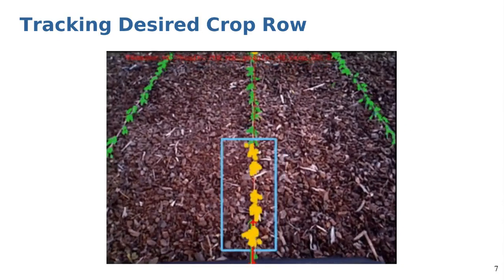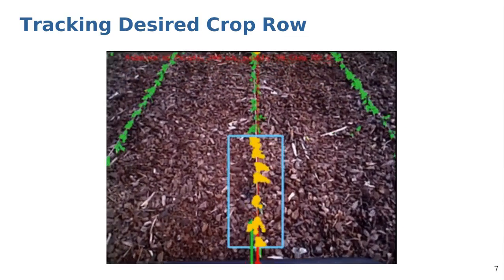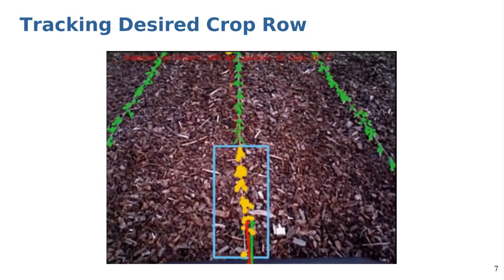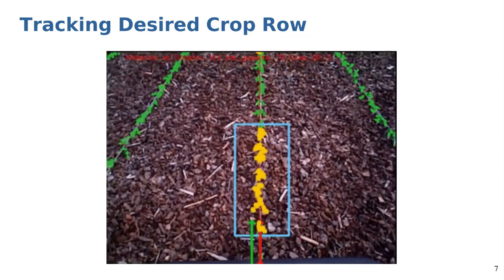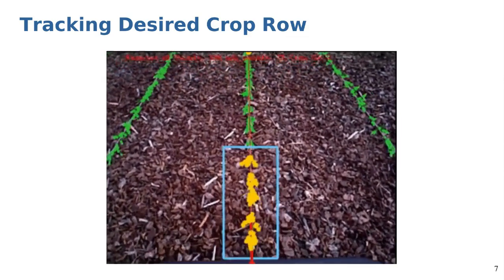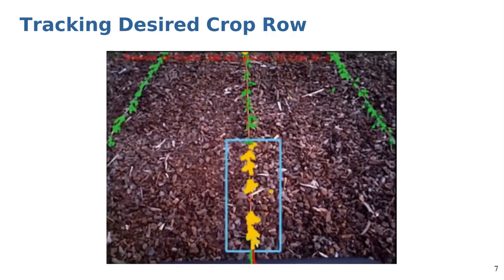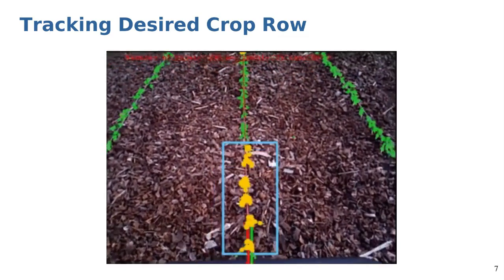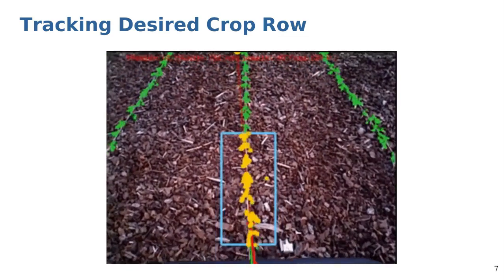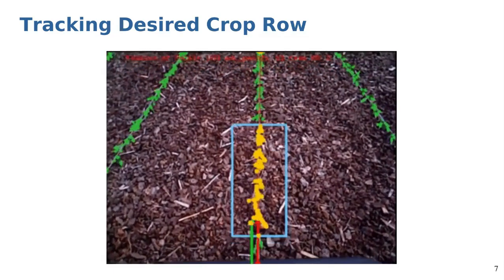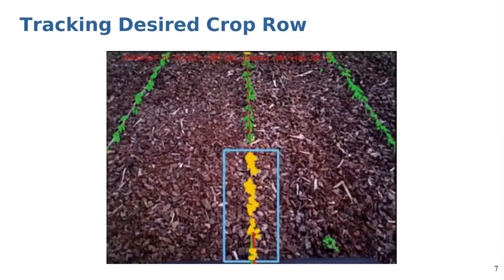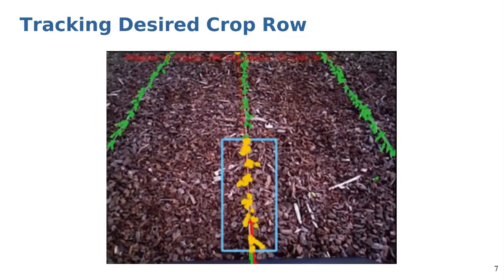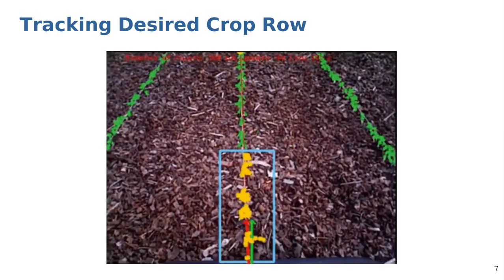To track a desired crop row we use a fixed size sliding window. For every new camera image we update its position by averaging the positions of crops located in the desired row and inside the window. Updating the position of this window continuously allows for tracking a crop row and ensures that the robot follows it up to its end. At the end of each crop row the position of this window will be shifted to capture the next crop row to guide the robot through the next row.